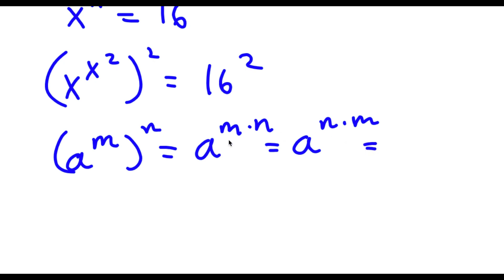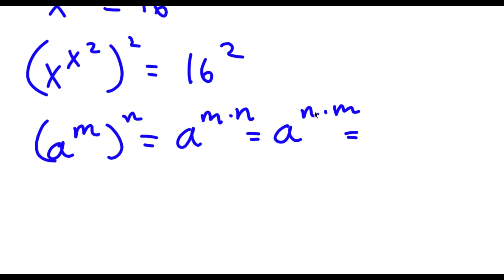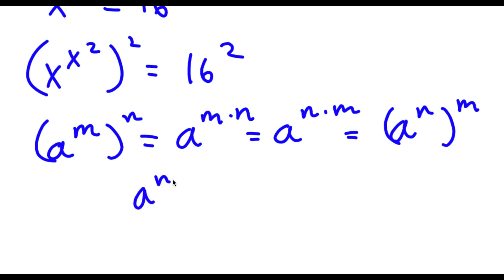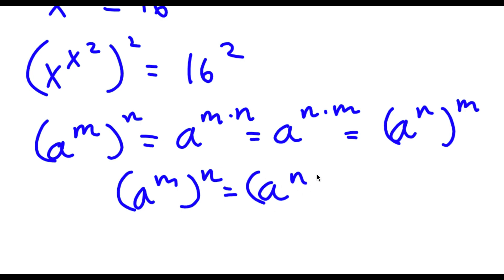So if a to the power of m times n equals a to the power of m to the power of n, then a to the power of n times m equals a to the power of n to the power of m. In simpler terms, a to the power of m to the power of n is equal to a to the power of n to the power of m.